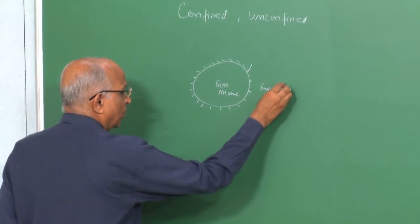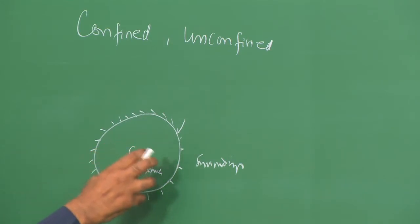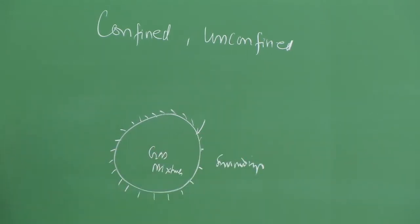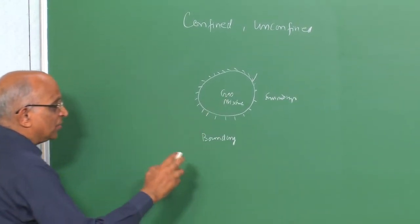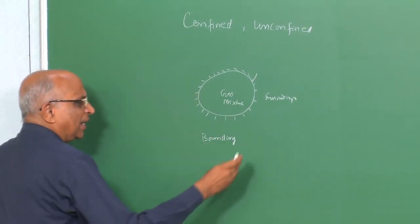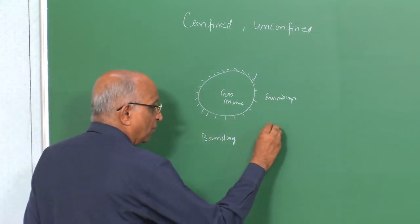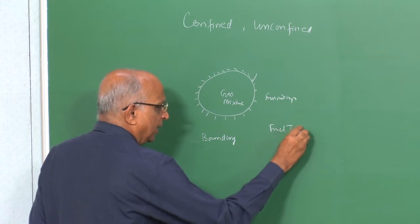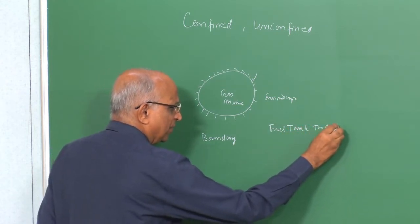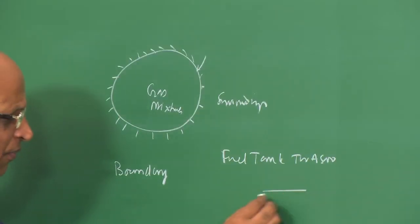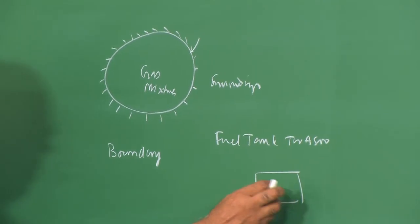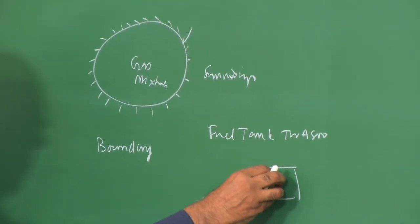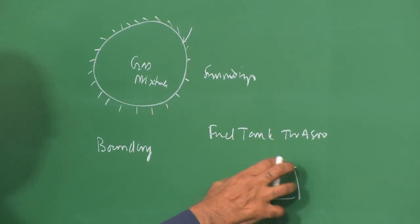It is quite possible that the boundary will give way and the products of combustion will thereafter mix with the surroundings. When we say confined, the boundary containing the gas mixture is something like a tank — for instance, the fuel tank in the TWA 800 flight, which exploded. The tank acts as a solid boundary or storage vessel; the gas builds up high pressure and then blows off.